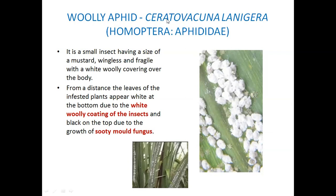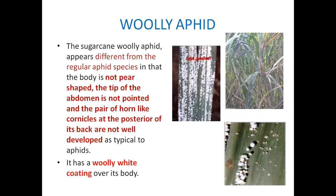The sugarcane woolly aphid was first reported in India only in 2002. It is actually an aphid covered with woolly material for protective purposes — that is why it is called sugarcane woolly aphid. Scientific name: Ceratovacuna lanigera, family Aphididae, order Homoptera. Like other sap-sucking insects, the aphid is present on the lower surface, sucks sap, and produces yellowing of leaves on the upper surface. It also excretes large amounts of honeydew, causing sooty mold fungus to grow, which covers the entire leaf.